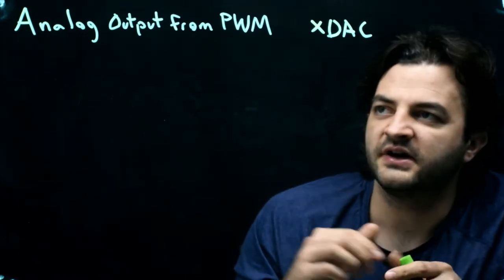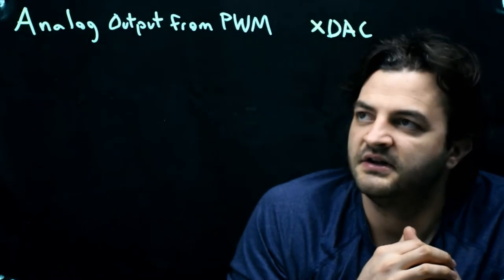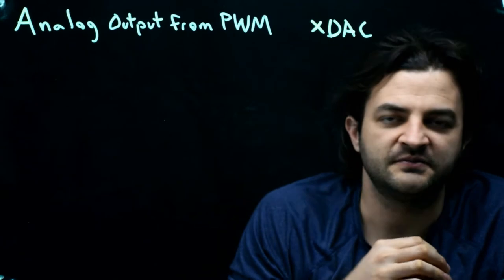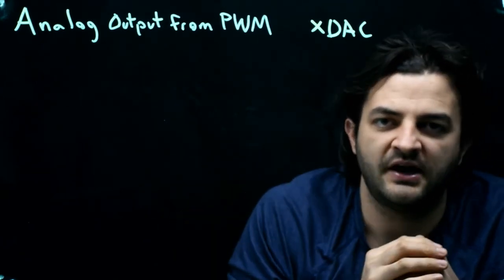So instead, we'll try to use PWM, our pulse wave generator, into an analog filter called a low-pass filter to smooth out our square wave and make a nice smooth output voltage.